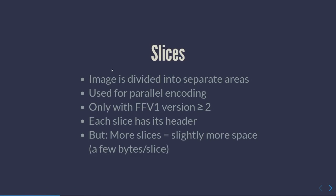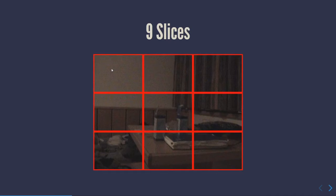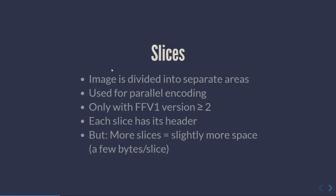A more interesting parameter introduced in FFV1 after version one is slices. Your frame gets chopped up into parts, and these parts can then be fed in parallel to encoding threads in the CPU, which enables the encoder to run in parallel.